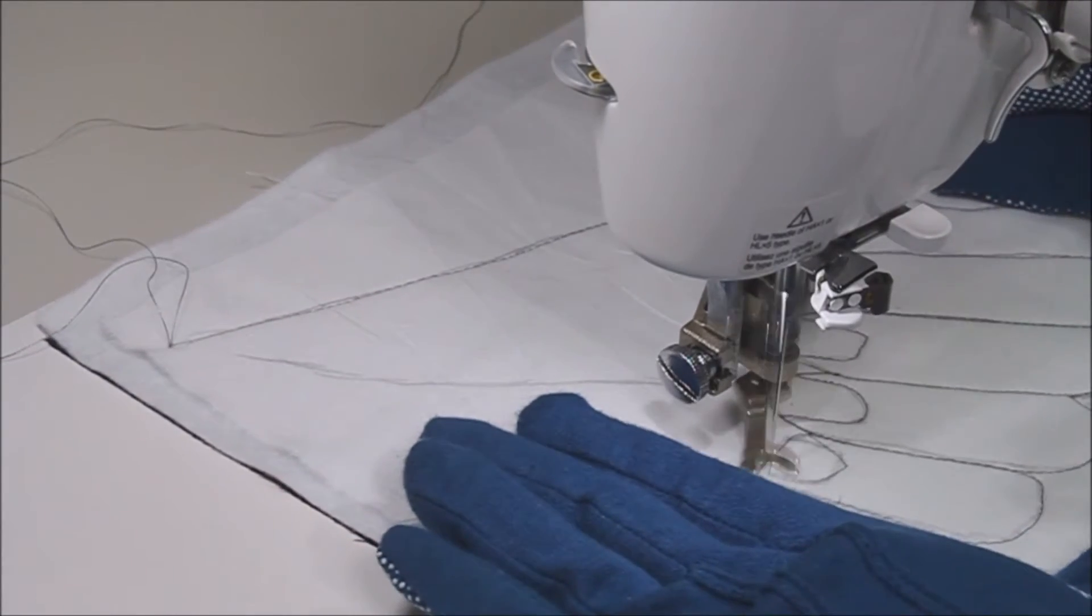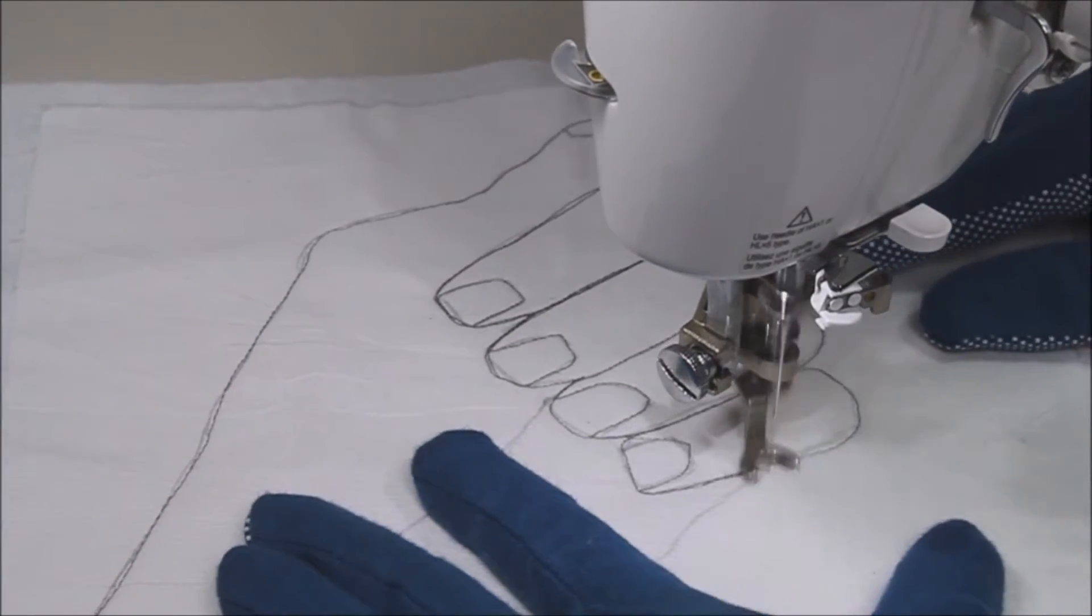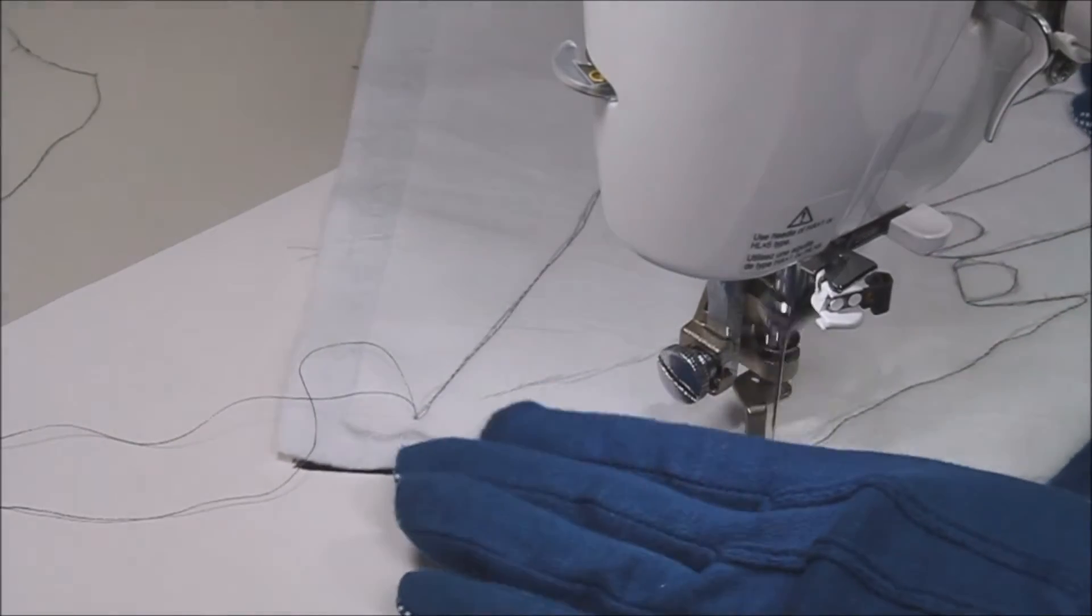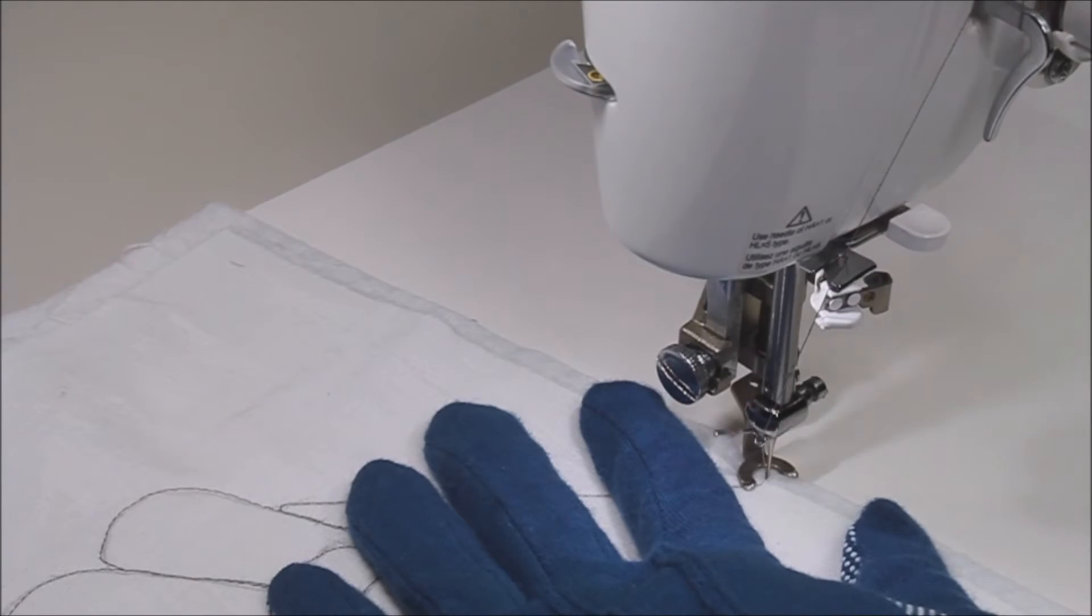After a lot of trial and error, I realized that I could use gray color thread. So I'm using a gray color thread in this sketch so that it will show both in front and in the back.